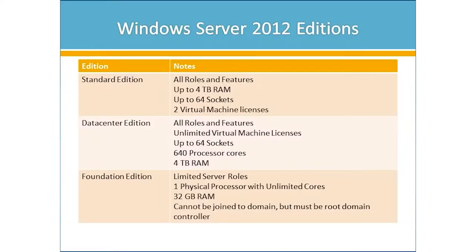I'm going to quickly go through the Windows Server editions. You need to understand there are licensing and cost issues with each edition, so you get to pick the one that closely maps to what you need. Standard edition is what I see the most of — you have everything you need, all roles and all features available. Nowadays you can go up to four terabytes of RAM and 64 sockets. With Standard edition, if you install the Hyper-V role and your hardware is Hyper-V ready, you can use that same license to create two more virtual machines — so essentially you can buy one server and get three.